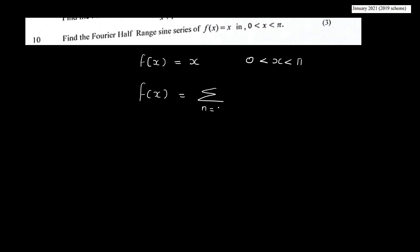Find the Fourier half-range series of f of x equal to x in the range 0 less than x less than 5. This is the half-range sine series. The equation is f of x equal to summation n equal to 1 to infinity bn sin n pi x by l.